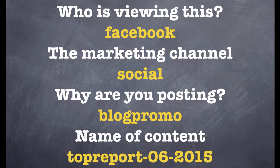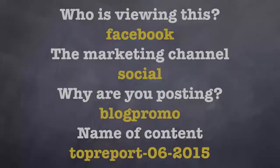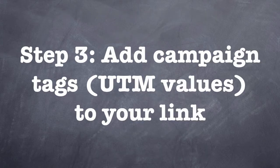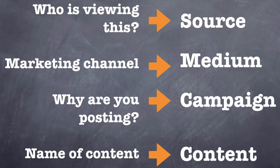Now that we've answered the four questions, it's time to move on to step three: adding these campaign tags to the links we send out. We need to translate them into campaign tags. The answer to who is viewing this becomes the source. The marketing channel or method becomes the medium. Why we're posting becomes the campaign. Finally, the name of that particular piece of content becomes the content tag.